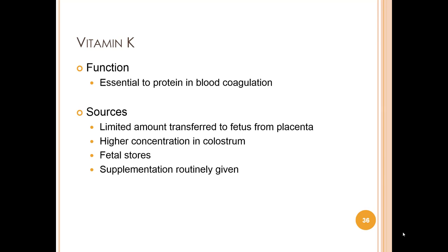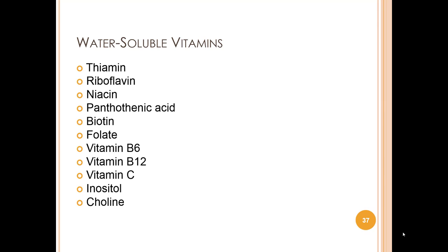Water-soluble vitamin levels vary with stage of lactation, maternal intake, and if delivery takes place prematurely, they need to be obtained via the maternal diet. These include thiamine, riboflavin, niacin, pantothenic acid, biotin, folate, vitamin B6, vitamin B12, vitamin C, inositol, and choline. Inositol is a vitamin-like sugar alcohol with half the sweetness of sucrose, involved in the central nervous system and signal transduction pathways. Choline, similar to a B vitamin, is essential and important in the nervous system; it can be made in the liver and is found in foods such as liver, meats, fish, nuts, beans, peas, spinach, wheat germ, and eggs.